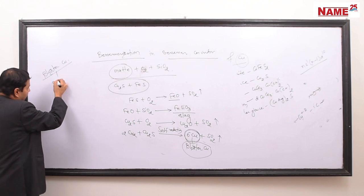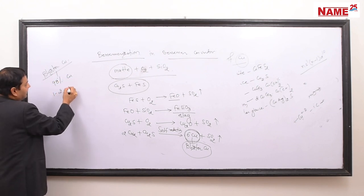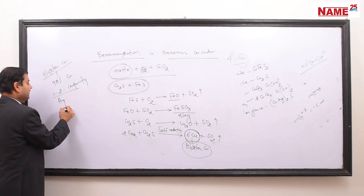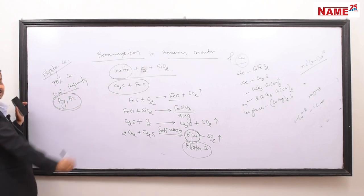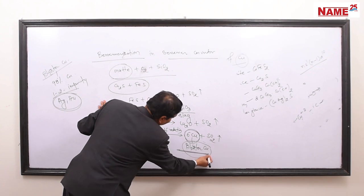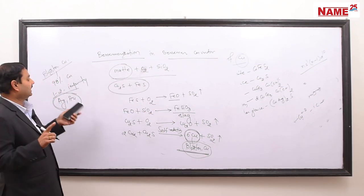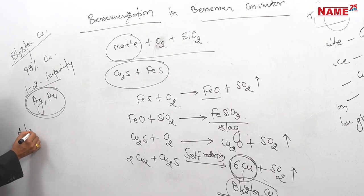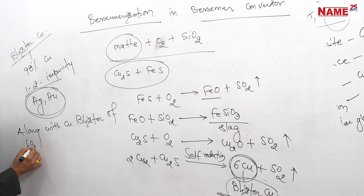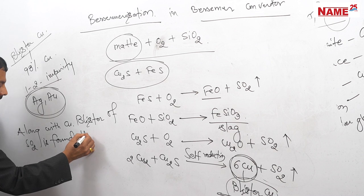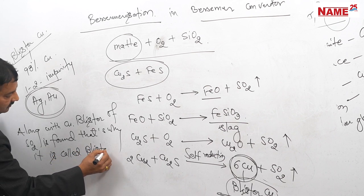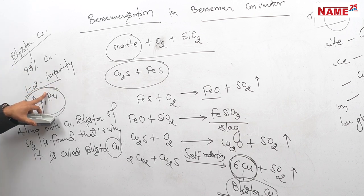Blister copper is 98% pure, with 1–2% impurities including silver and gold. It is called blister copper because blisters of sulfur dioxide gas are found on its surface. To remove the 1–2% impurities and obtain 100% pure copper, electro-refining is used.